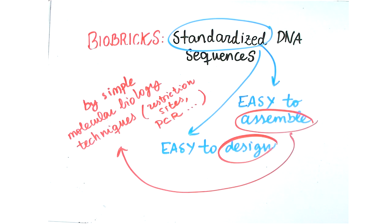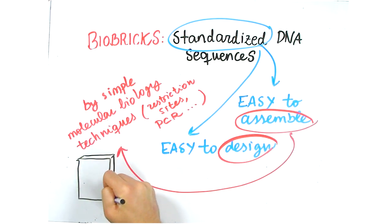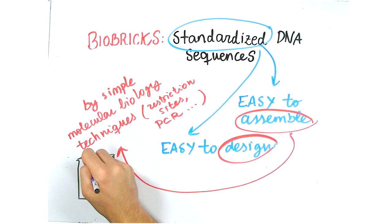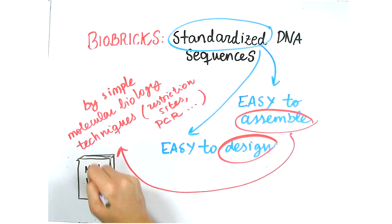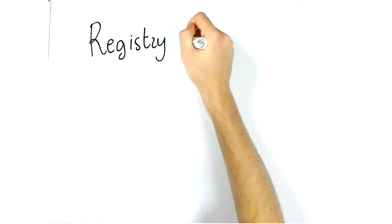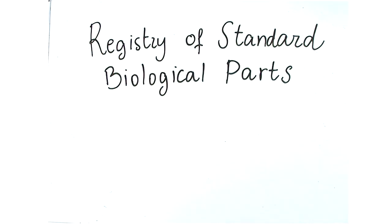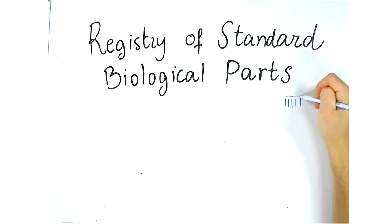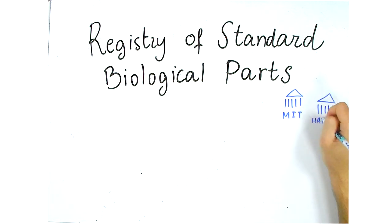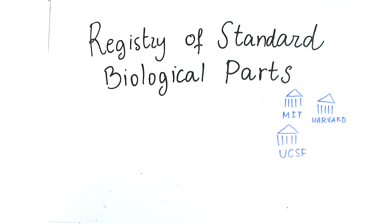If you want to learn more about these parts, you can find more information on each of these parts in the supplemental resources provided or in a molecular biology textbook. The biobricks can be found in the Open Access Registry for Standard Biological Parts, which was developed by researchers from MIT, Harvard, and UCSF.